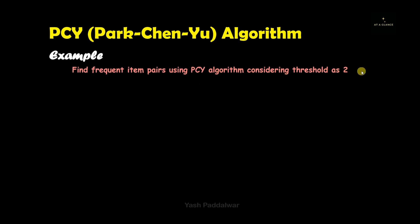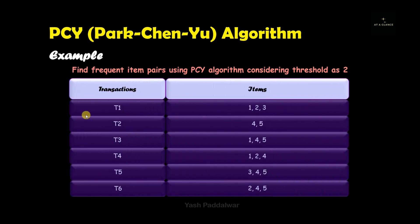Now let's look at an example. We need to find the frequent item pairs using the PCY algorithm considering the threshold as 2 — that means the minimum threshold condition here is 2. We are given a set of transactions, which are the items purchased by customers. In the first transaction items 1, 2 and 3 are purchased. In the second transaction we have items 4 and 5. The third transaction has items 1, 4, 5. In the fourth transaction we have items 1, 2, 4, and so on.